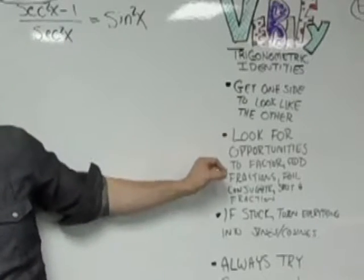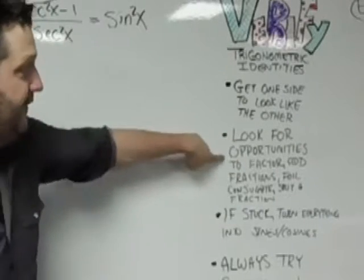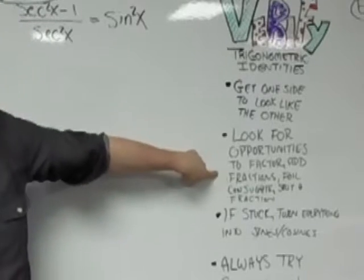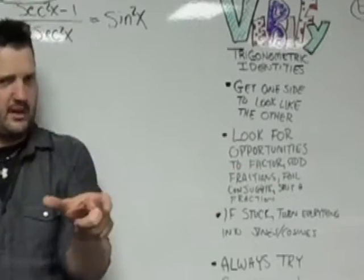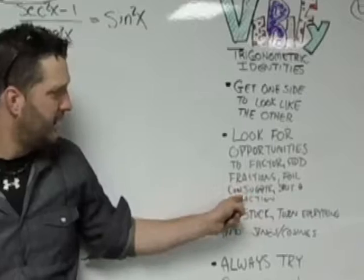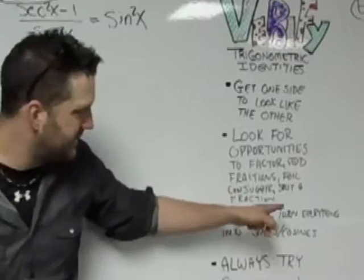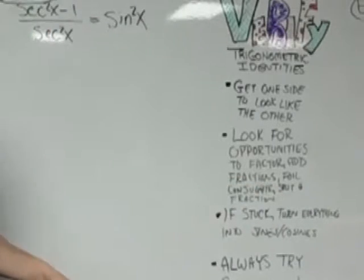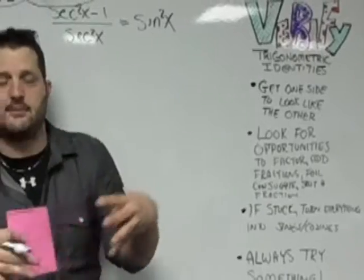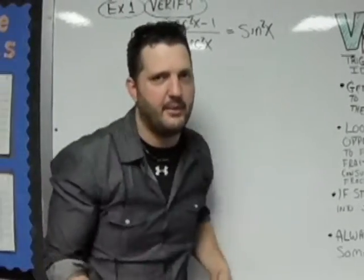The next hint is when you're working these, we want to look for opportunities to factor. Maybe we need to add fractions. Maybe we have two binomials we need to foil. We might need to use the conjugate sometimes. We might need to split a fraction sometimes. We might need to add fractions sometimes, which means you'll have two fractions and you've got to get the same denominator.